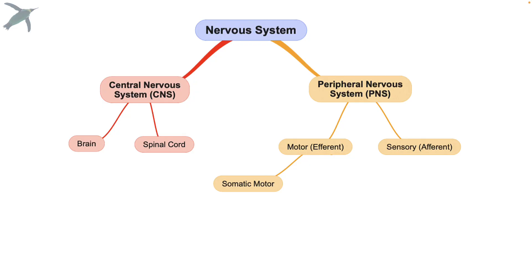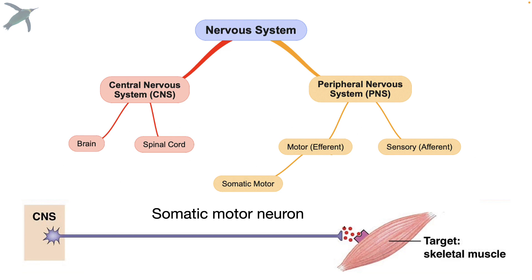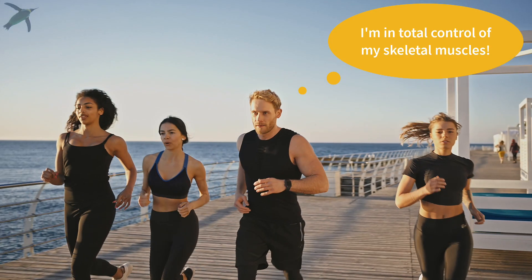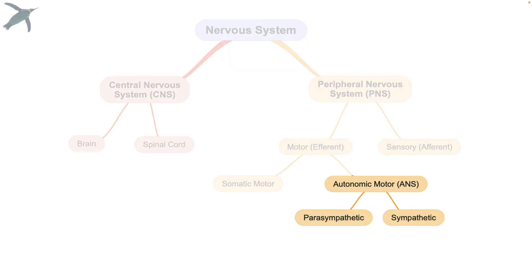On the motor side, we have the somatic motor division, which refers to neurons that control skeletal muscles. I'm going to use those as a point of comparison for the autonomic motor neurons, because students are more comfortable and familiar with them. But what we're talking about today are autonomic motor neurons — the autonomic nervous system — which is comprised of two divisions: the sympathetic and parasympathetic.